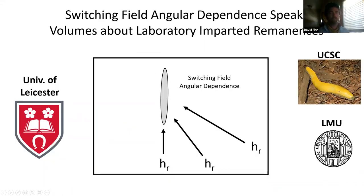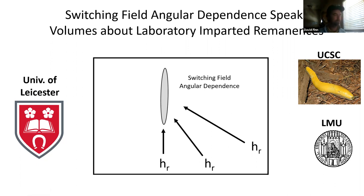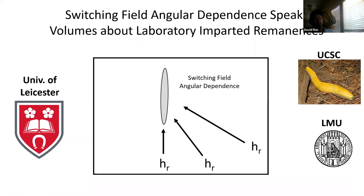Thanks for having me. I'm going to talk about switching field angular dependence and its influence on the measurement of anhysteretic remanence. We could just as well talk about IRMs or GRMs, but ARMs are perhaps the most interesting to start here. I have a cartoon showing that the critical field required to flip the moment of an elongate particle is dependent on the angle between the particle long axis and the applied field direction. The applied field is most effective when applied along the particle long axis.